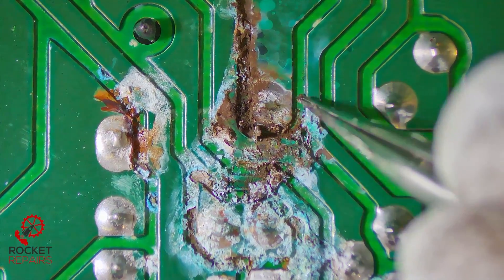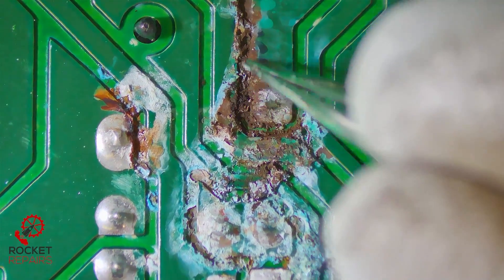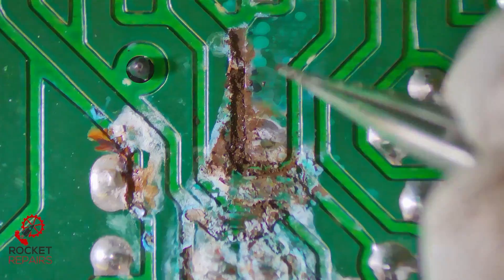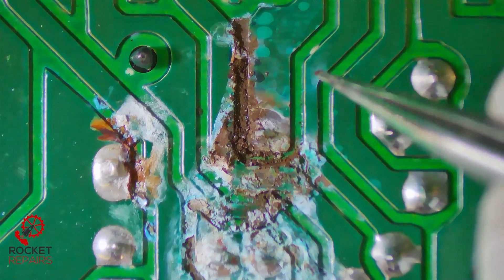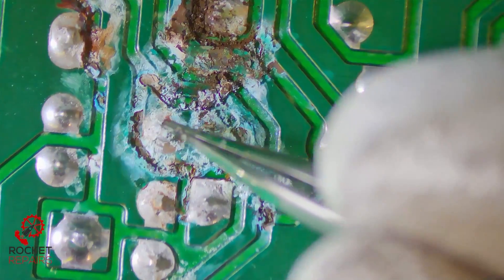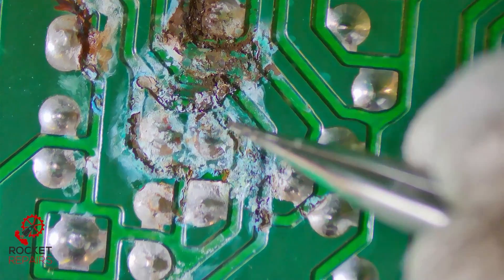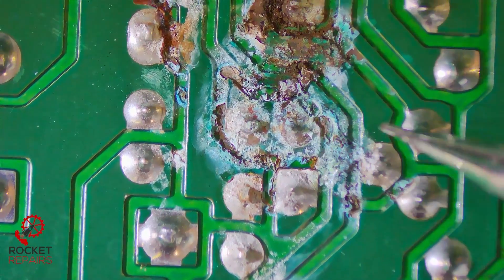I believe these thinner green traces here are all ground, so we don't necessarily need to worry about this track here. The traces we need to worry about are the thicker ones. We can see that we have solder joints here as well as here, here, here, and here. I need to clean up this area so I can get a better view.